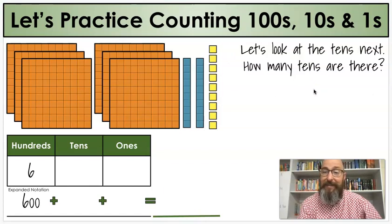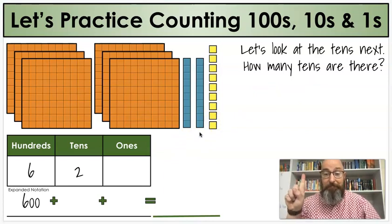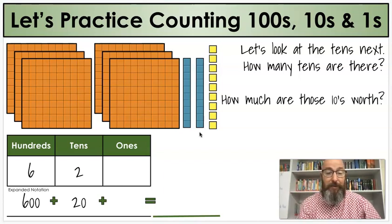Next, let's look at the tens. How many tens are there? Two, that means we count by ten, two times. Count by ten, two times. I'm sure you got 20.